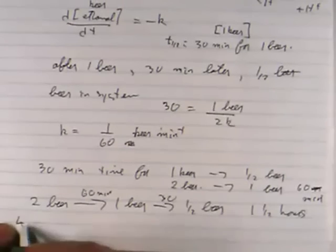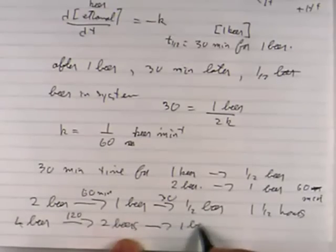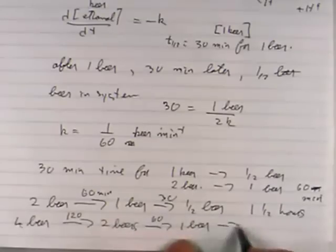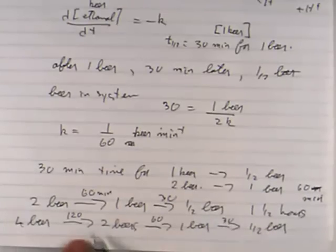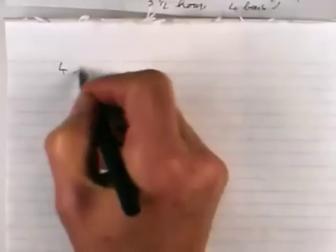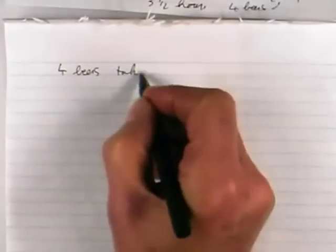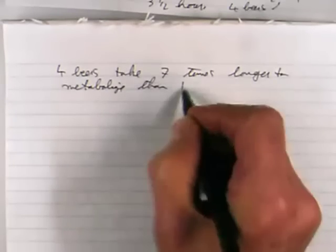If you have four beer, then from four beer to two beers, it takes two hours, 120 minutes. Then it goes from two beers to one beer, it takes another sixty minutes, and then from one beer to half a beer so you can drive it takes thirty minutes. So that's sixty, that's two, three, that's three and a half hours. Four beers take seven times longer to metabolize than one beer.